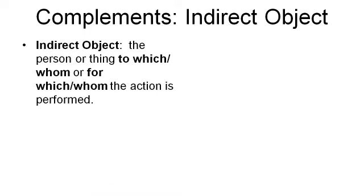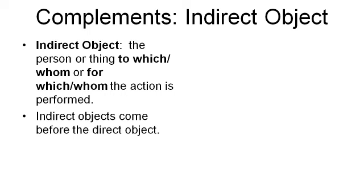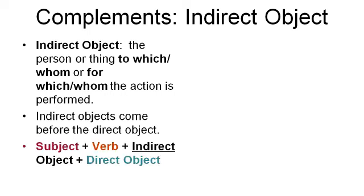Another type of complement is the indirect object. The indirect object is the person or thing to which, or to whom, or for which, or for whom the action is performed. Indirect objects come before the direct object. The sentence pattern is: subject, verb, indirect object, then the direct object — S-V-IO-DO. The indirect object comes directly after the verb and before the direct object.